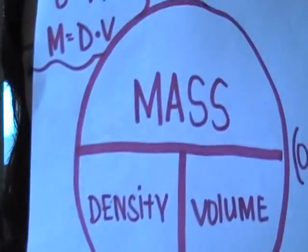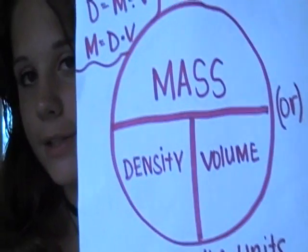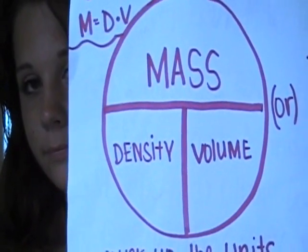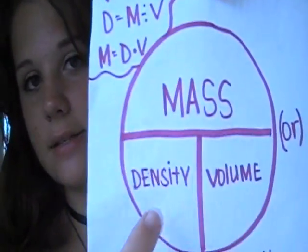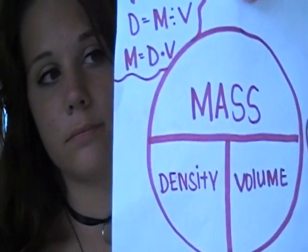I created this little circle — it's like a little cheat thing. It basically shows mass, density, and volume. For instance, if the problem says: what's the density for 32.457 grams and 13.5 centimeters cubed — what's the density for it?